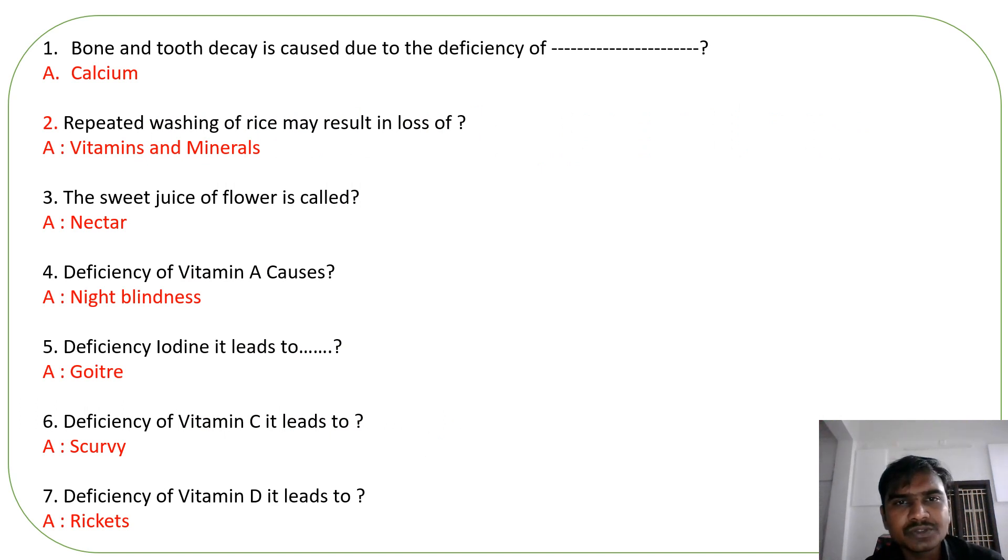Bone and tooth decay is caused due to deficiency of calcium. Repeated washing of rice may result in loss of vitamins and minerals. The sweet juice of flower is called nectar. Deficiency of vitamin A causes night blindness. Deficiency of iodine leads to goiter disease. Deficiency of vitamin C leads to scurvy disease. Deficiency of vitamin D leads to rickets.